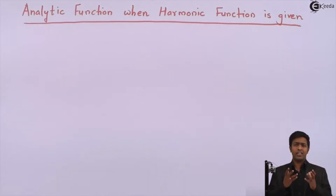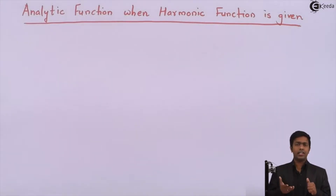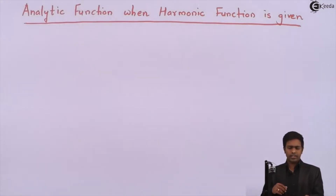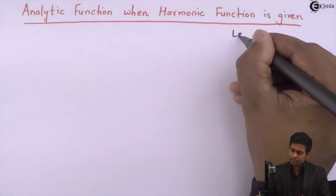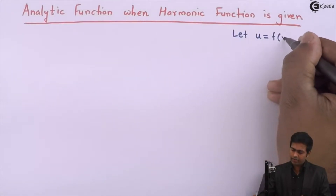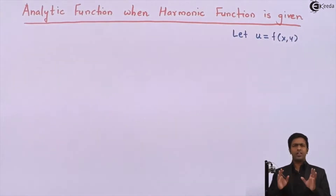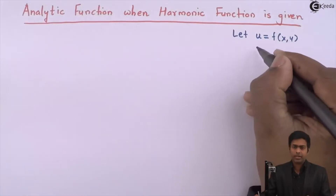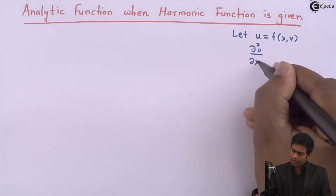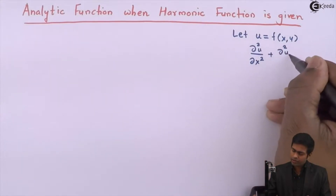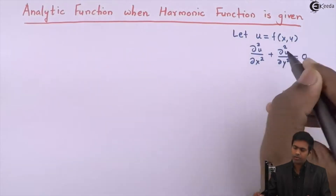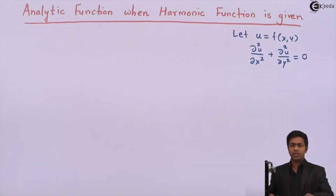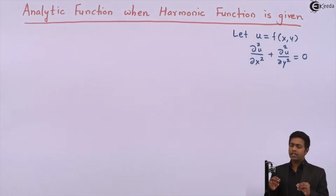Any function u of x and y in Cartesian format, if it satisfies the Laplace equation — that is, ∂²u/∂x² + ∂²u/∂y² = 0 — then we call that the Laplace equation in Cartesian coordinates.